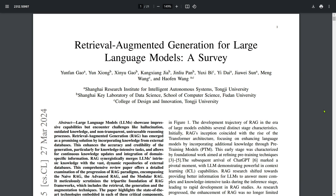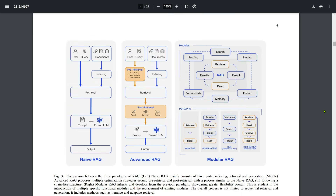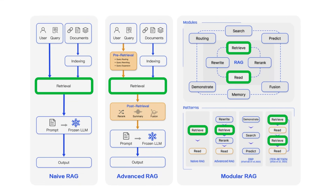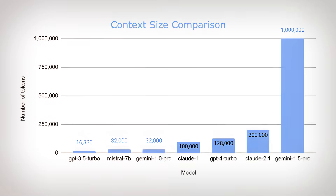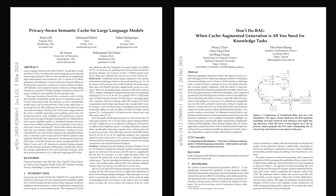This limitation gave rise to approaches like Retrieval Augmented Generation, or RAG, in 2023, which dynamically fetches the necessary context. As LLMs evolved to support much larger context windows — now up to 100,000 tokens or even millions of tokens — new approaches like caching, or CAG, began to emerge, offering a true alternative to RAG.